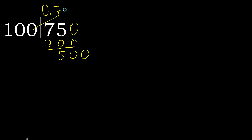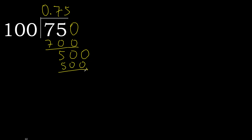100 multiplied by 5 is 500. Not greater, subtract 0. Therefore finish it: 75 divided by 100 equals 0.75.